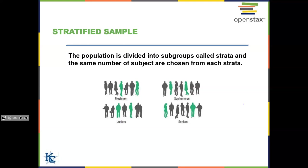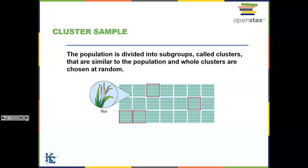Stratified sampling is when the entire population is broken into subgroups — like a college broken into freshman, sophomore, junior, and senior classes — and you sample the same number from each subgroup. Cluster sampling is similar to stratified, but instead of taking the same number from each subgroup, you divide the population into subgroups and then randomly choose whole subgroups to include in your sample.